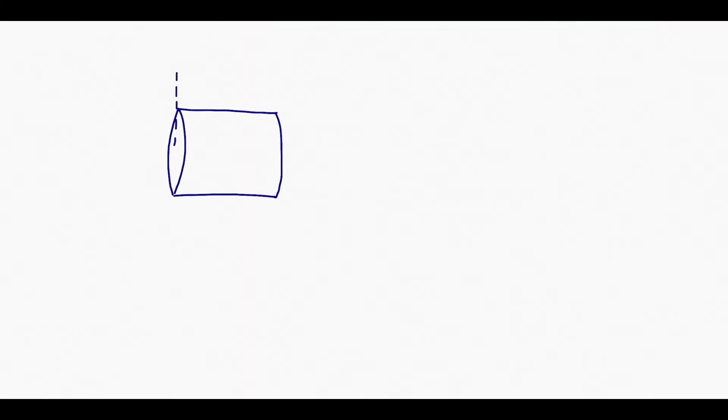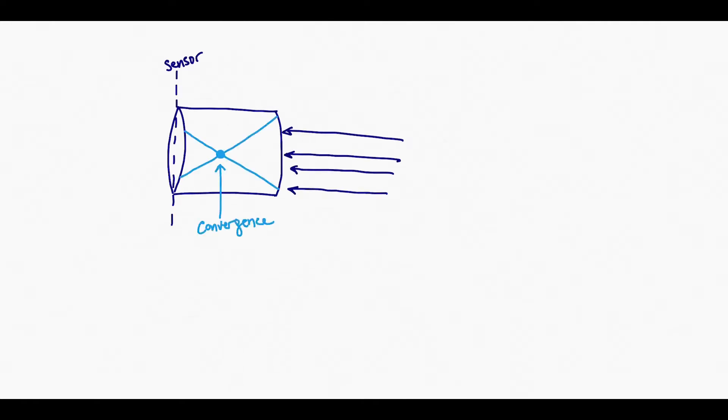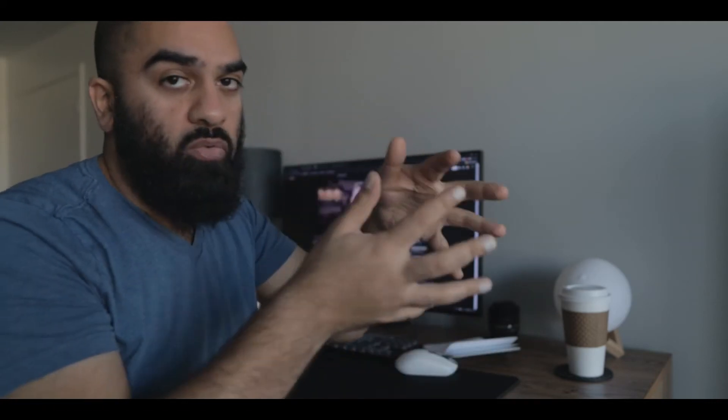Let's back up to what focal length actually is. Focal length is the distance from the point of convergence to the sensor. The point of convergence occurs because all of the light coming into the lens angles towards a point where they all converge, and then it diverges on the other end to hit the sensor. This is all in a circular lens, so it's 3D — think of a cone. You have a cone coming in to converge and then another cone diverging onto the sensor. When that point of convergence goes further away from the opening or further away from the sensor, you have a longer focal length.